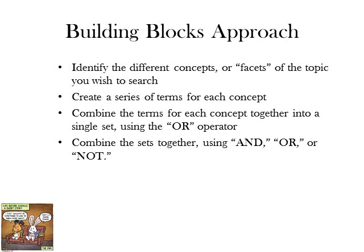The building blocks approach is as follows: you take what the person wants to know about, isolate the different concepts — or what we like to call facets — of the topic that you wish to search, and then you create a series of terms for each concept. For each concept, you combine all of the terms together with OR so that you get a massive set of all the documents relating to that concept. Then you combine those sets together using AND, OR, or NOT.